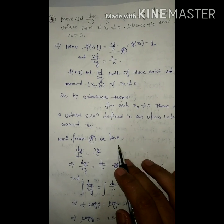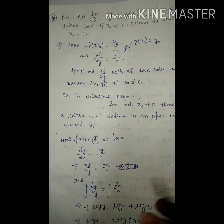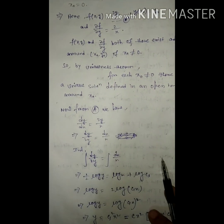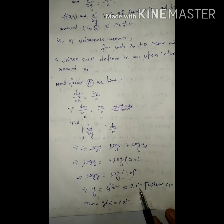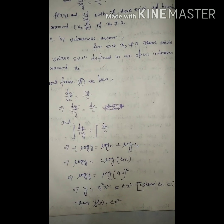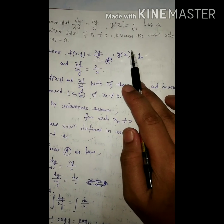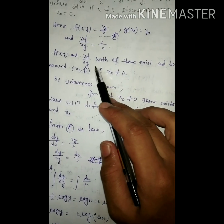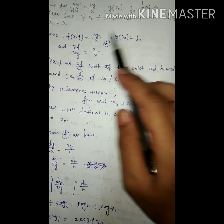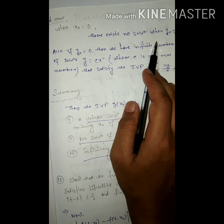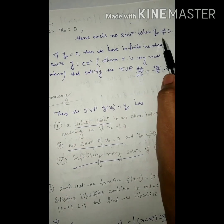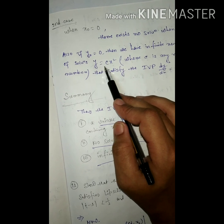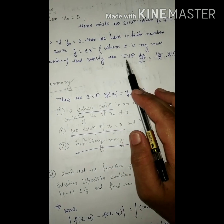The first part is proved. From the equation dy/dx = 2y/x, after integrating we get y = cx². Thus y(x) = cx². Now we consider the case when x₀ = 0. When x₀ = 0, there exists no solution because the function is 2y/x, so when x₀ = 0 there exists no solution when y₀ ≠ 0. Also, if y₀ = 0, then we have infinitely many solutions y = cx², where c is any real number.